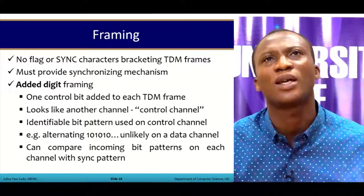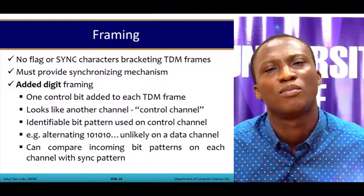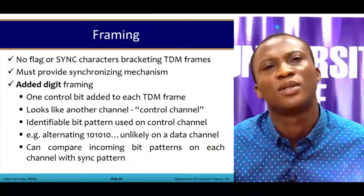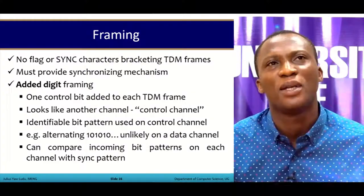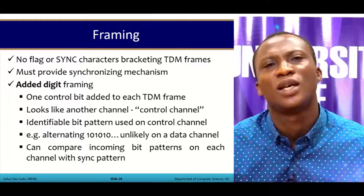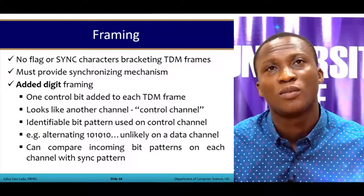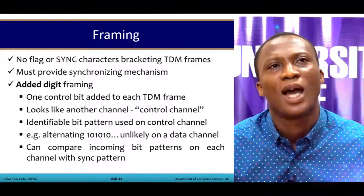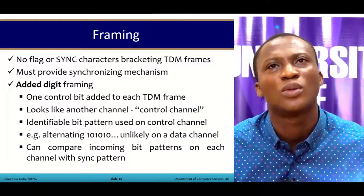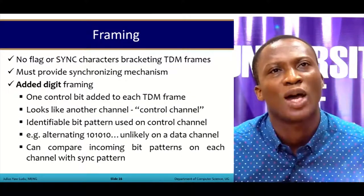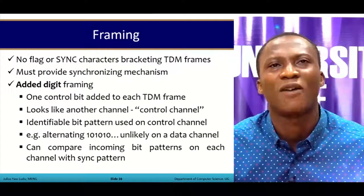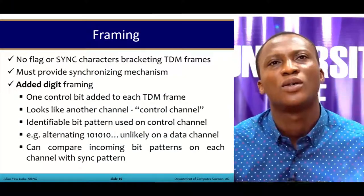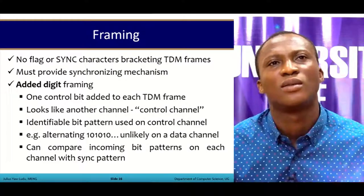For framing in TDM, no flag or sync character bracketing is employed. Instead, synchronization mechanisms are provided through added digit framing, where one control bit is added to each TDM frame — essentially acting as another channel or a control channel. An identifiable bit pattern, such as an alternating one and zero sequence, is used to control this channel and can be compared to incoming bit patterns on each channel with sync patterns.